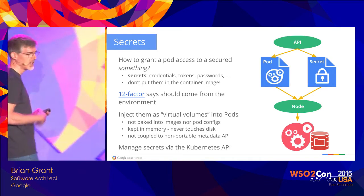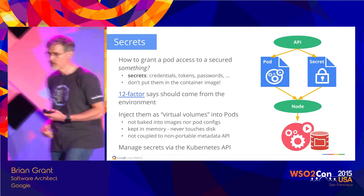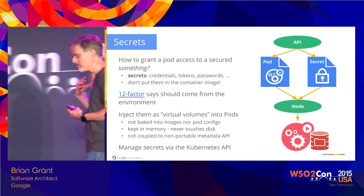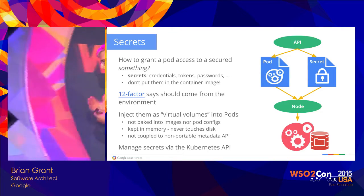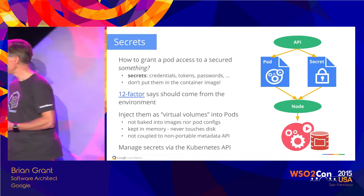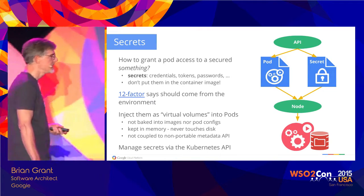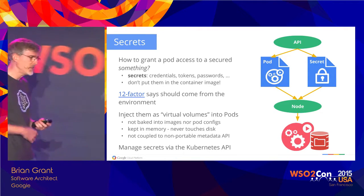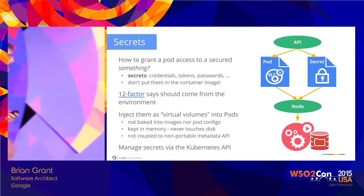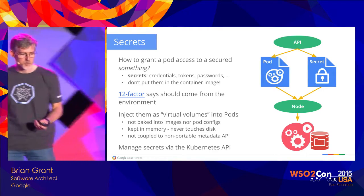You don't want to bake credentials, tokens, or passwords into your container images, and you don't even want to put them into your pod specification. You want to keep your secrets secure and inject them at the last minute. Kubernetes keeps secrets in memory — they don't touch disk. And unlike with virtual machines, they're accessed via a standard file API instead of a proprietary metadata API, which is what keeps the containers portable.